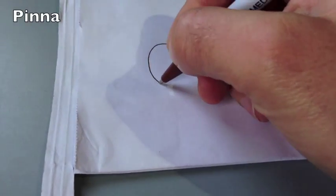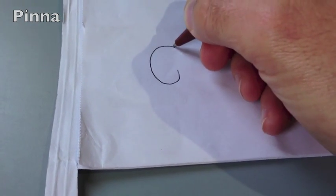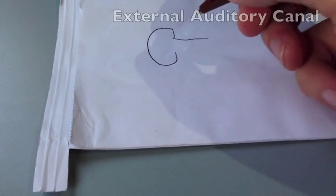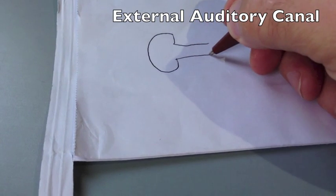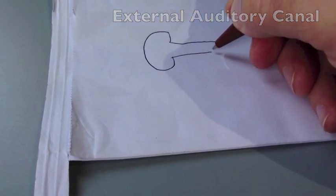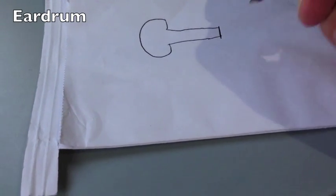Doctors like to call this outside part of the ear that sticks out the pinna. Then the ear hole going into your head is called the external auditory canal. The eardrum seals the outside from the inside.